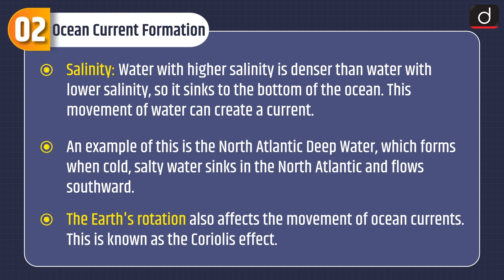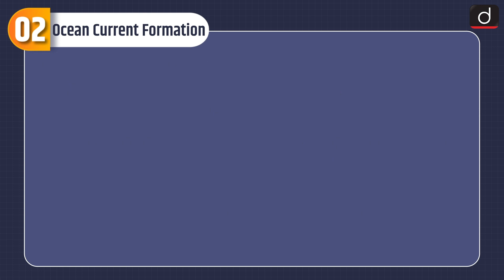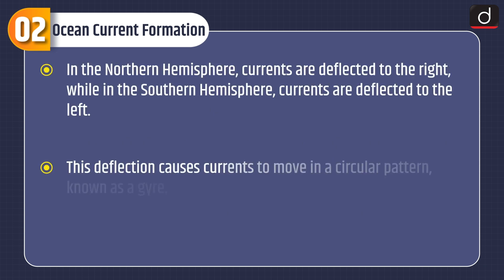An example of salinity-driven currents is the North Atlantic Deep Water, where cold, salty water sinks in the North Atlantic and flows southward. The Earth's rotation also affects the movement of ocean currents — this is known as the Coriolis effect. In the Northern Hemisphere, currents are deflected to the right, while in the Southern Hemisphere they are deflected to the left. This deflection causes currents to move in a circular pattern known as a gyre.